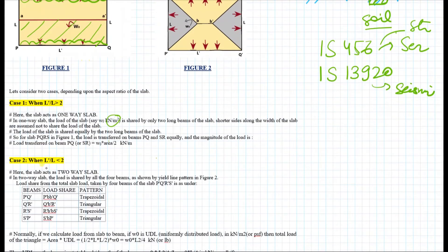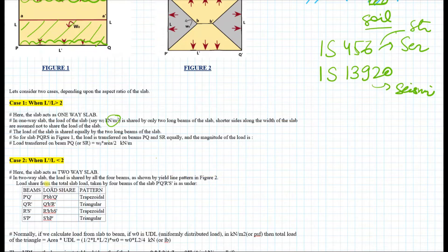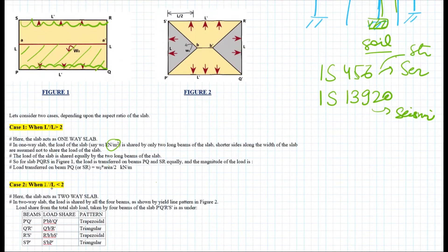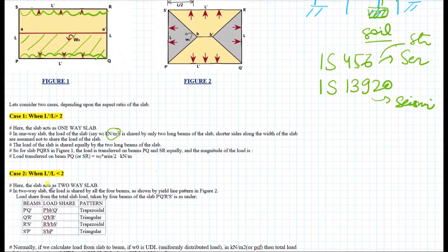Now let's look at Figure 2, which is a two-way slab where L' upon L is less than 2. Here the slab acts as a two-way slab and the load is shared by all four beams, as shown by the yield-line pattern in Figure 2. We will see which beam carries what kind of load and what is the area of load associated with each beam.